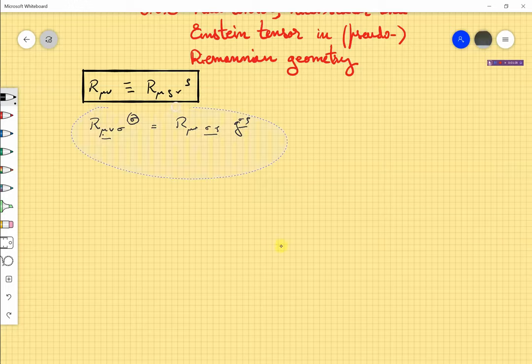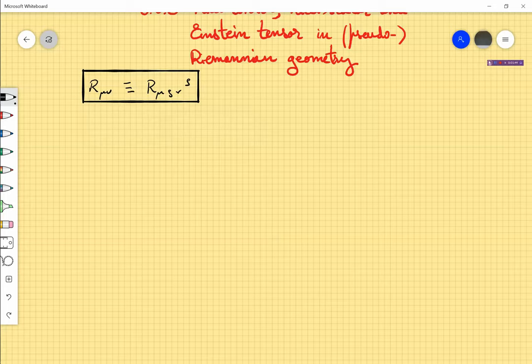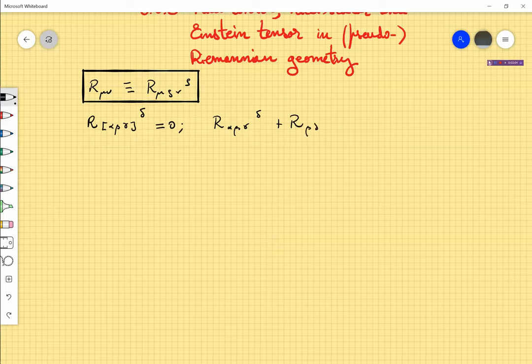This tensor in general is not symmetric for an arbitrary connection. But for the Levi-Civita connection it is symmetric and the proof is based on this Bianchi identity. So we are already putting them to use. Remember that this Bianchi identity can be expanded in this way. The cyclic permutations, R_αβγδ + R_βγαδ + R_γαβδ equal to zero.